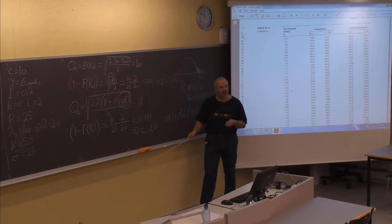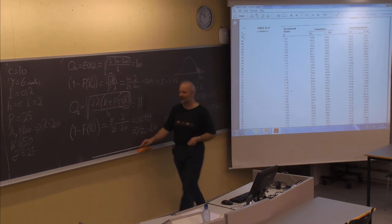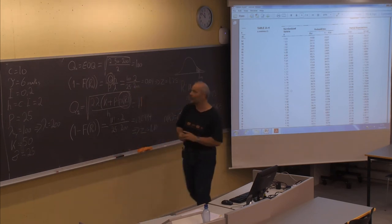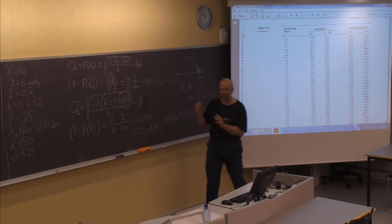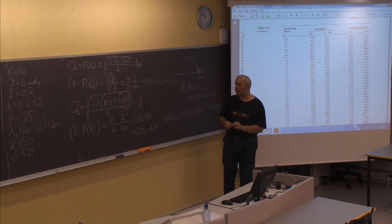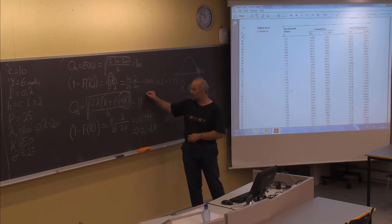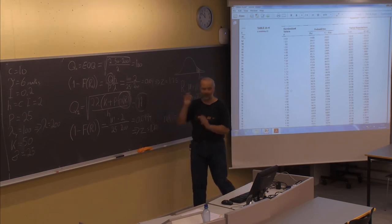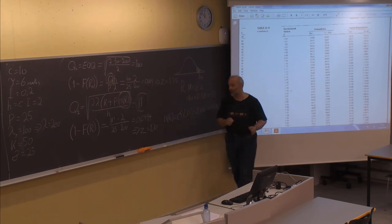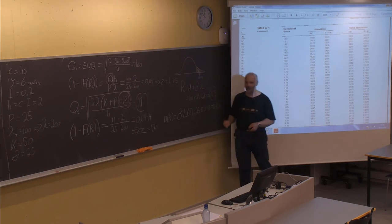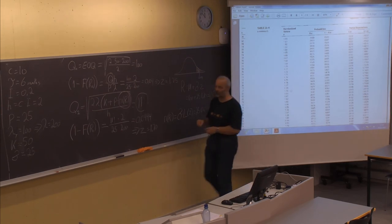The conclusion in this example: the optimal combination of Q and R is to order 111 items when you have 143 items left in stock.